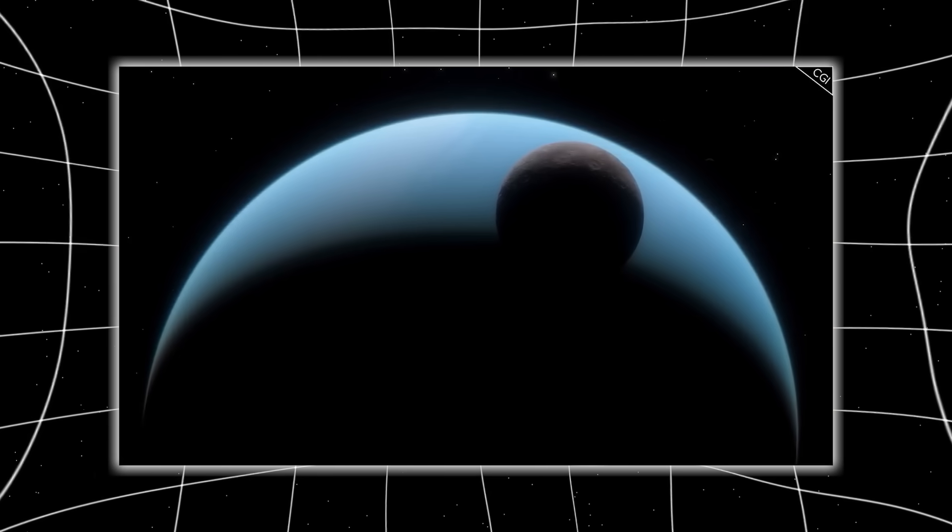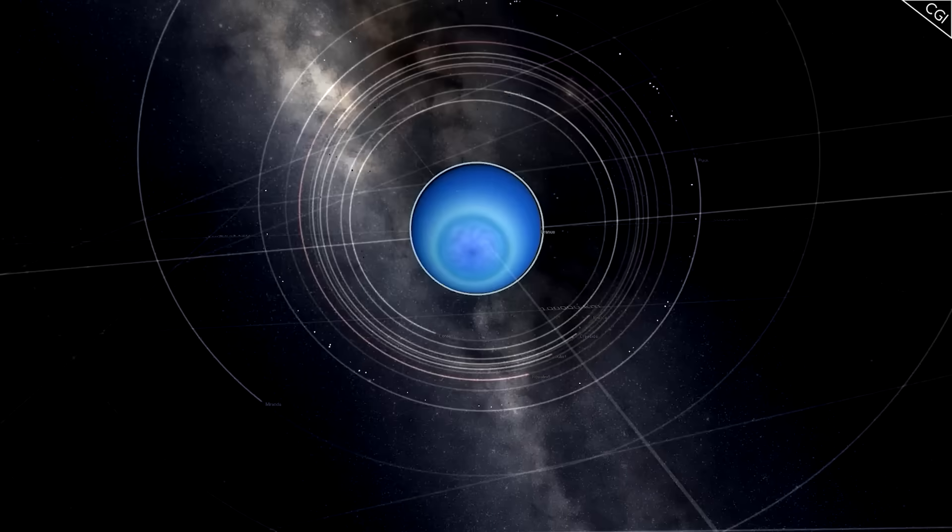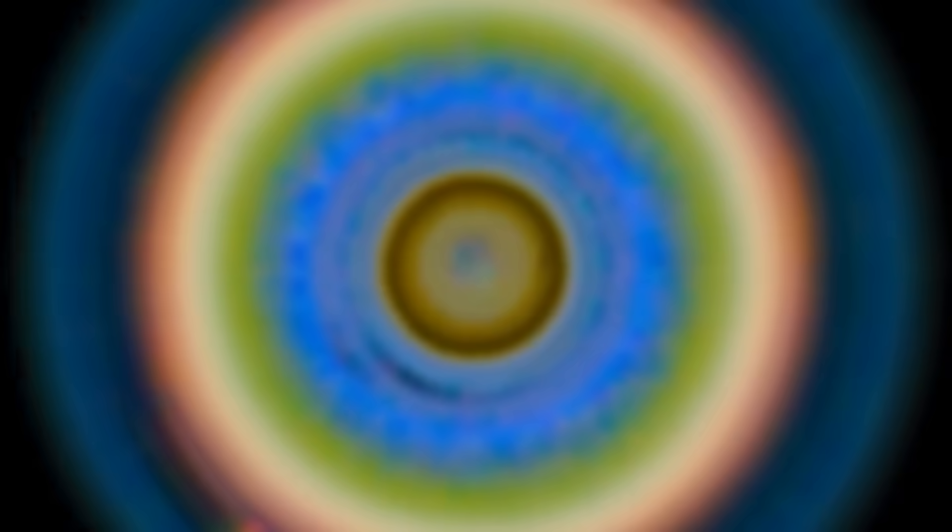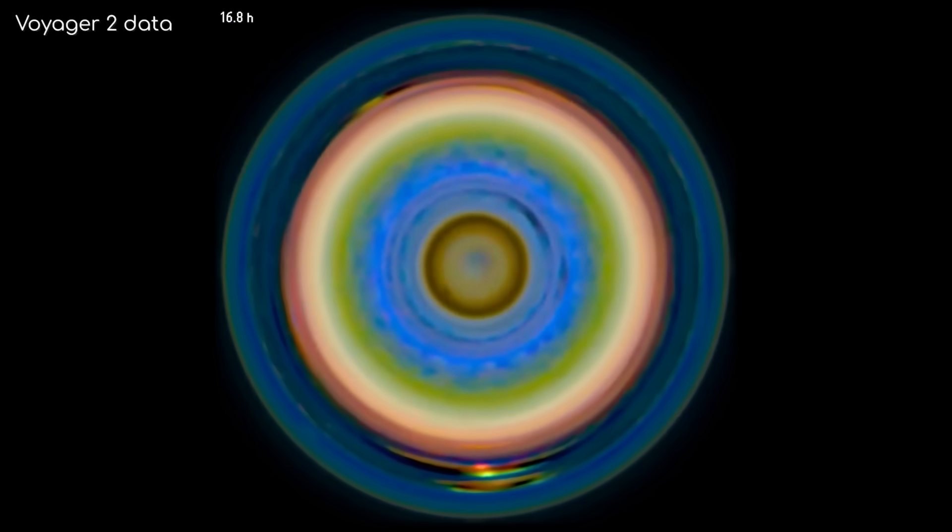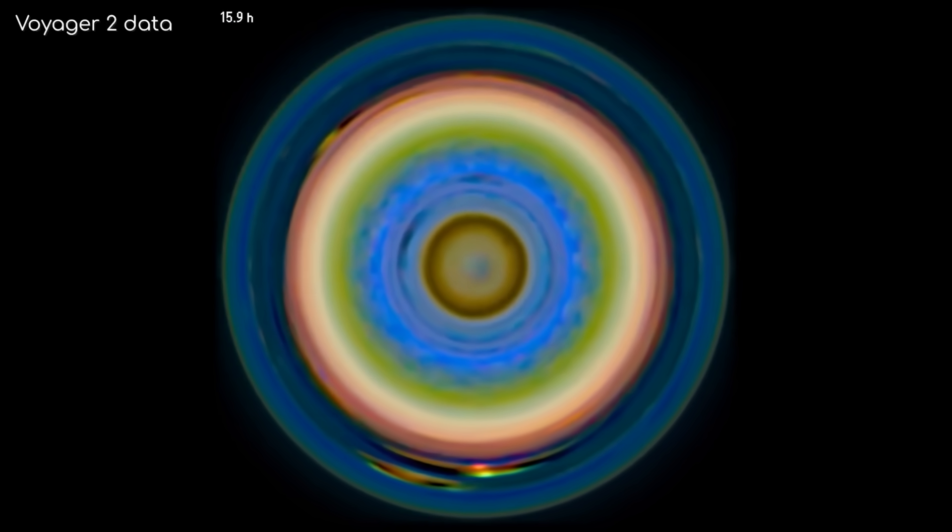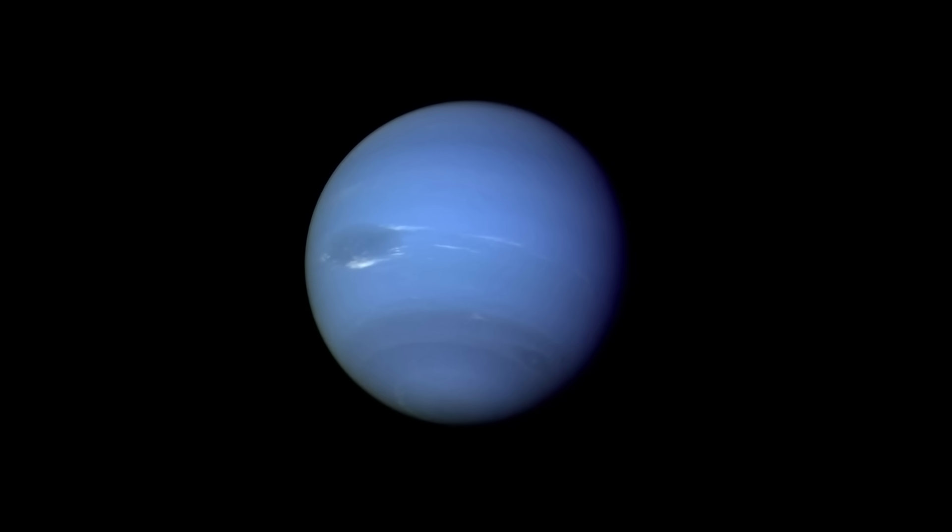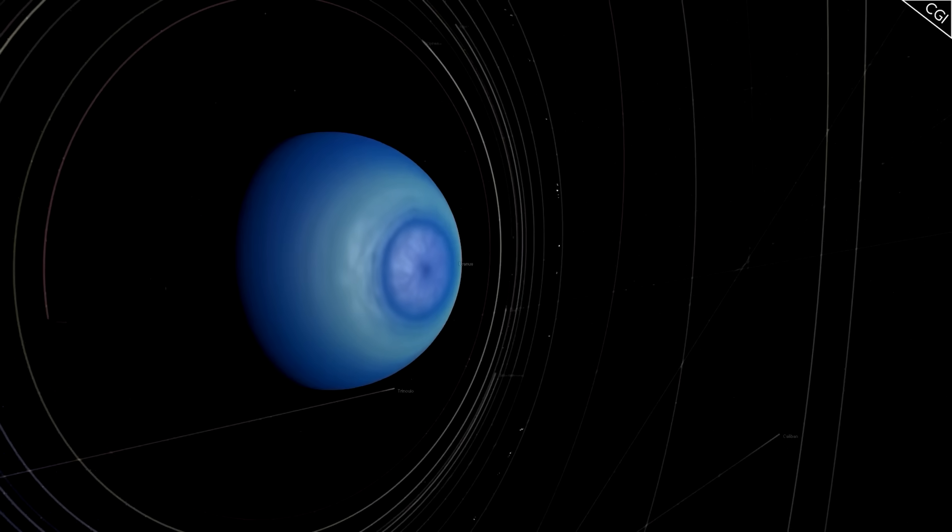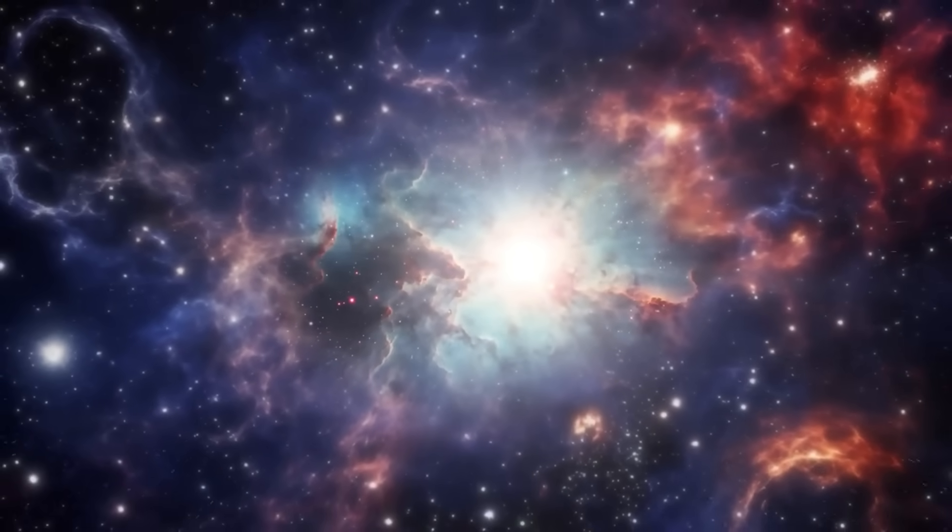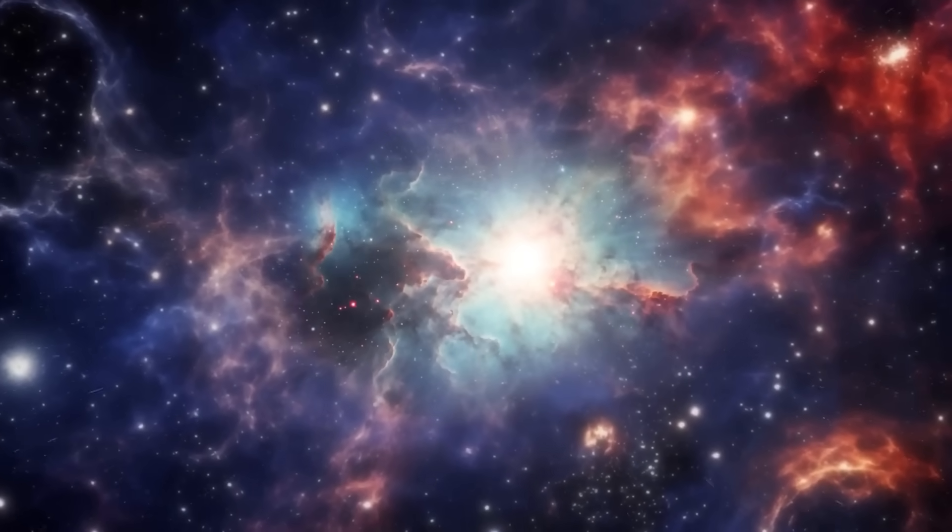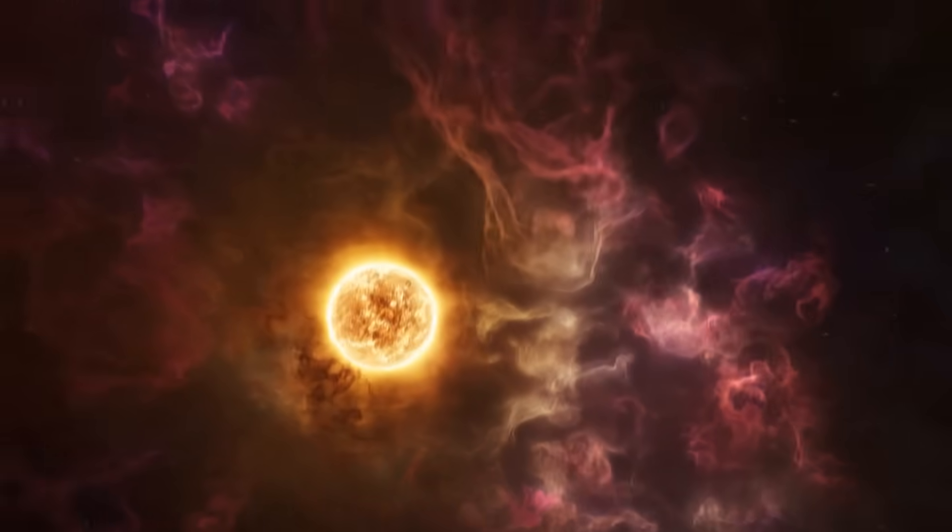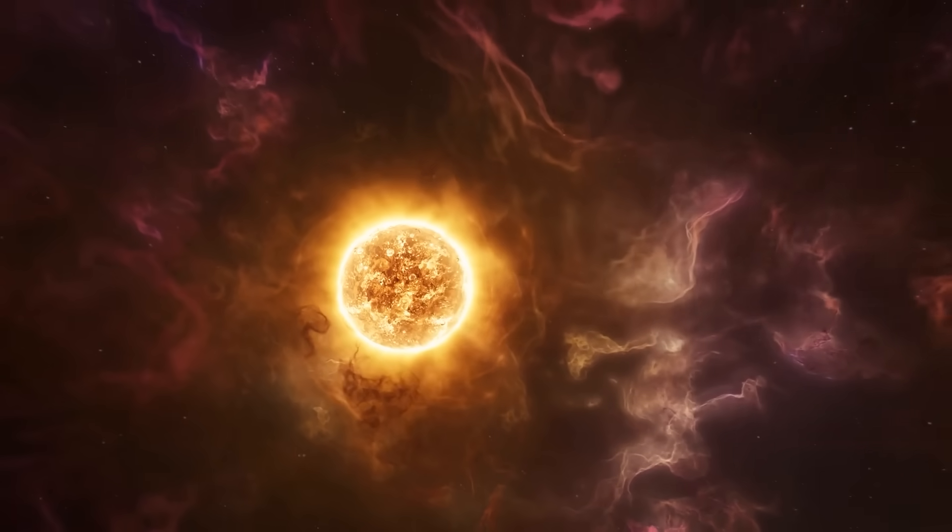On Uranus, things were even stranger. Webb captured a massive vortex near the North Pole, so vast it could swallow Earth whole, yet inside it, temperatures spiked to levels no model could explain. The gases within seemed to generate heat spontaneously, hinting at unknown chemical reactions or perhaps even electrical feedback within the planet's magnetic field. For the first time, astronomers began to suspect that gas giants might not just be planets. They could be natural reactors, driven by forces that connect them directly to the Sun itself.